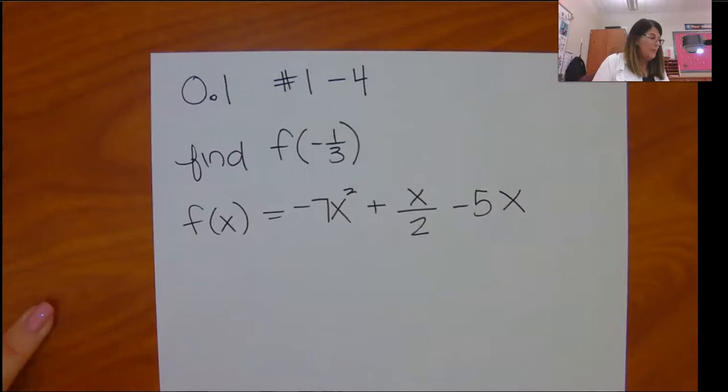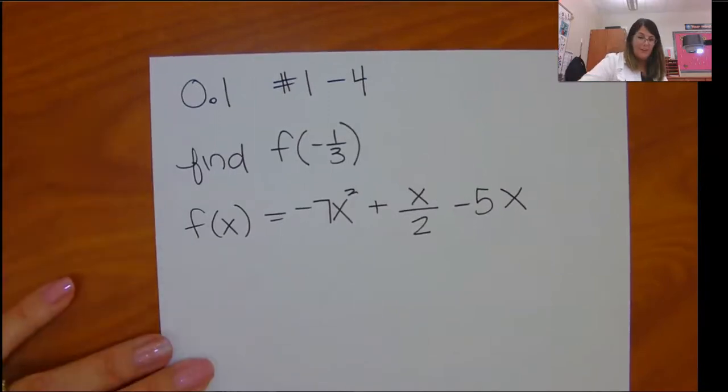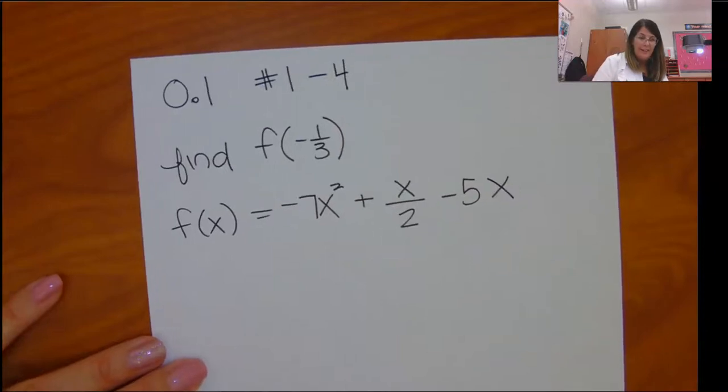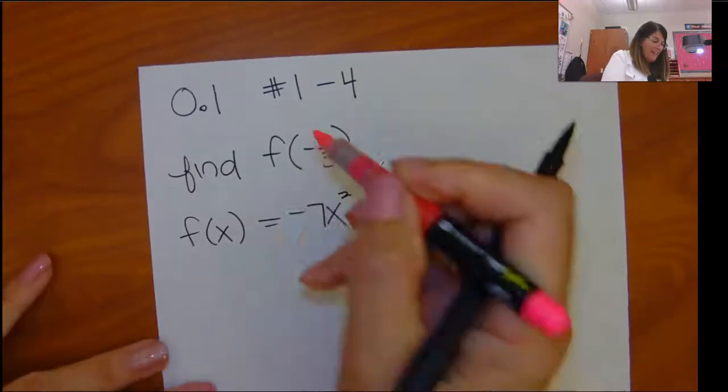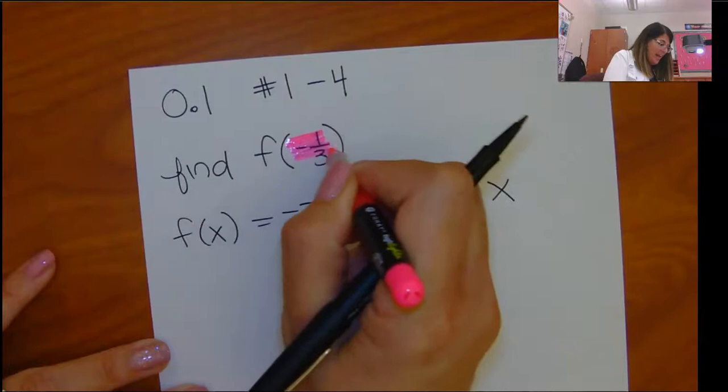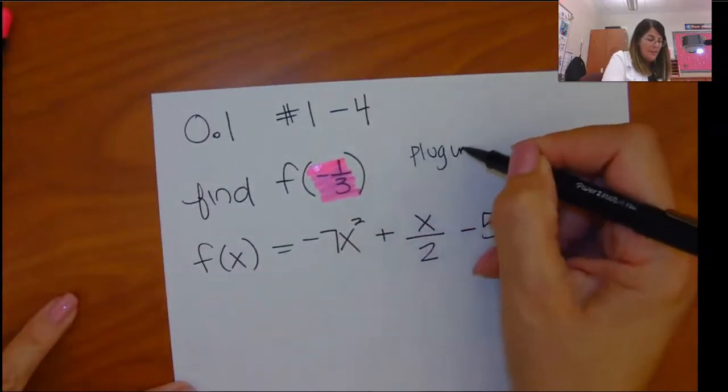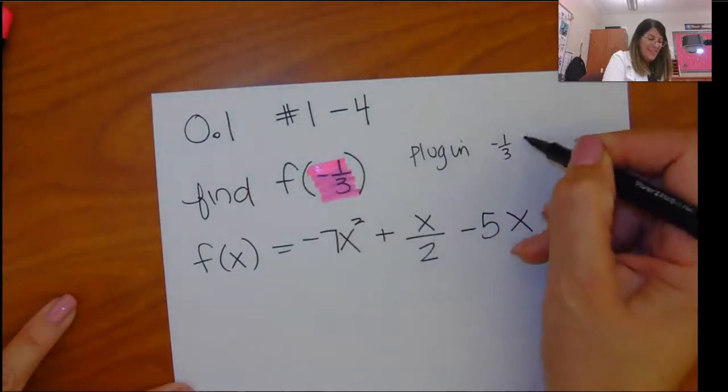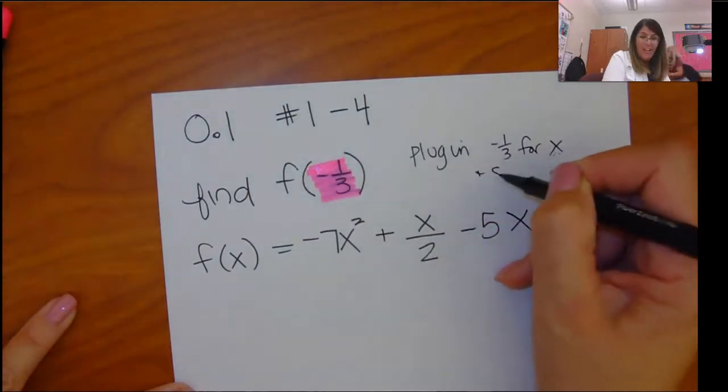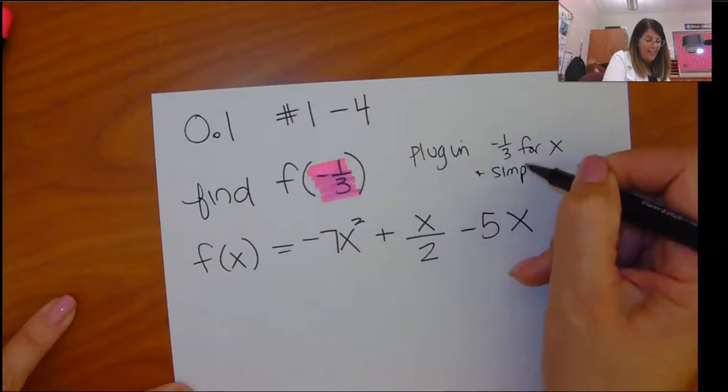So what you are doing in this particular problem is you are evaluating a function for a specific number. So if I give you this and I say find f of negative 1 third, what that really means is plug in negative 1 third for x and go ahead and simplify everything.